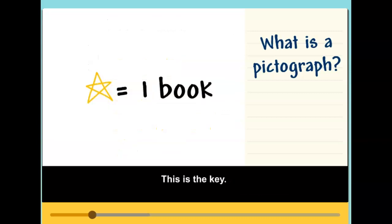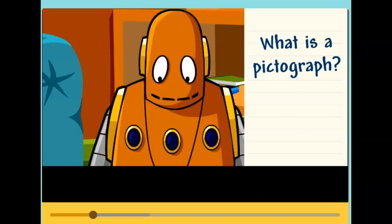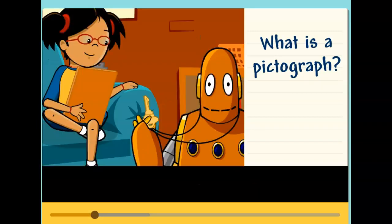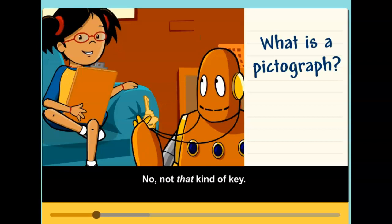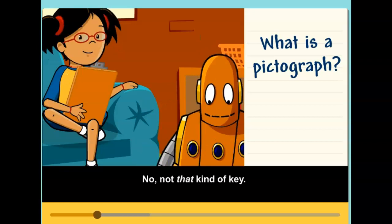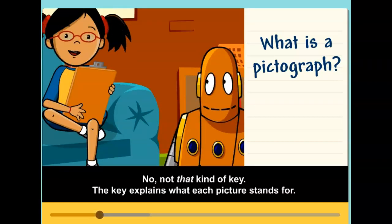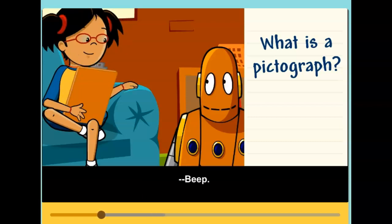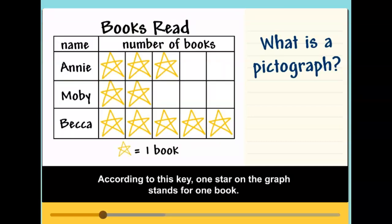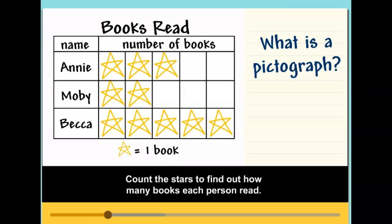This is the key. Not that kind of key. The key explains what each picture stands for. According to this key, one star on the graph stands for one book. Count the stars to find out how many books each person read.